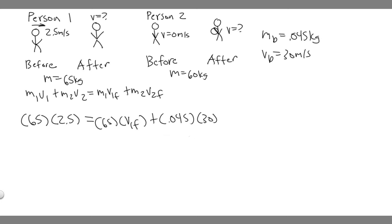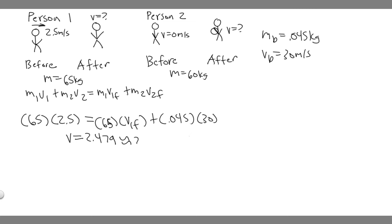Now we just solve. Move the snowball term to the other side and divide by 65: v1_final = (65 × 2.5 − 0.045 × 30) ÷ 65. That gives v1_final ≈ 2.479, which we round to about 2.48 meters per second. This makes sense — throwing a snowball isn't going to dramatically slow you down, so the velocity is very close to the initial 2.5 meters per second.